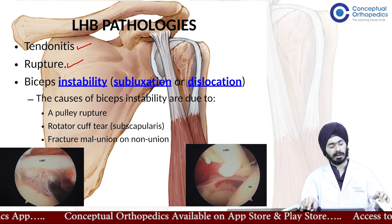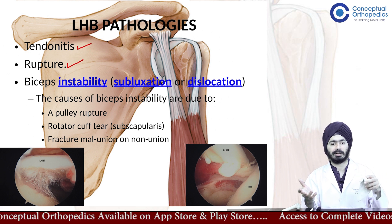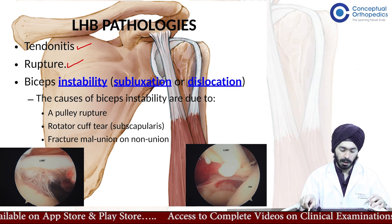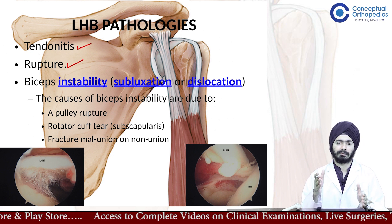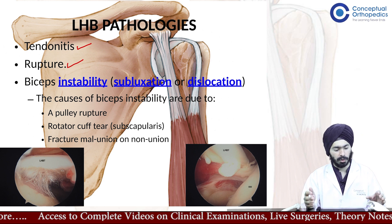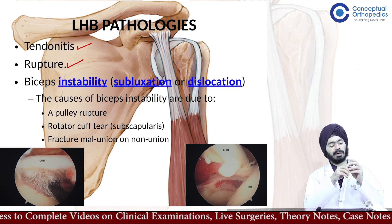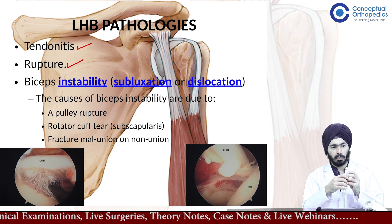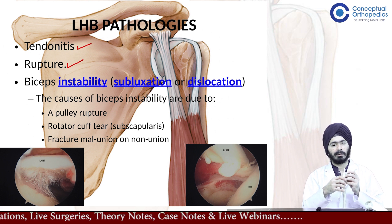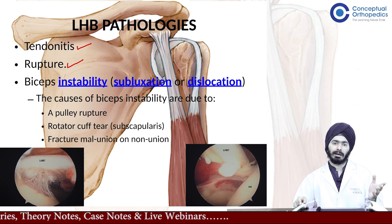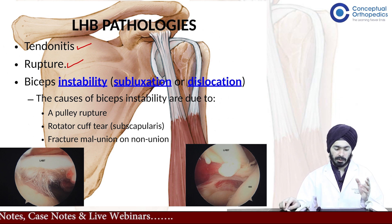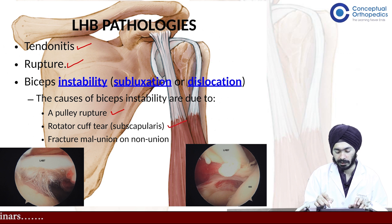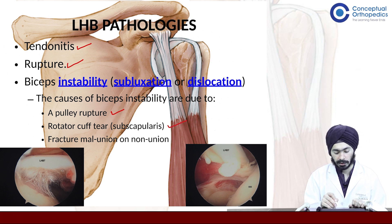The biceps tendon can also be ruptured — the long head of biceps ruptures from its attachment and classically presents as the Popeye sign. There may also be biceps instability, presenting as subluxation or dislocation, where the biceps tendon slips out of the groove, usually anteriorly. Causes of biceps instability include a pulley rupture, a rotator cuff tear such as a subscapularis tear, or other associated pathologies.